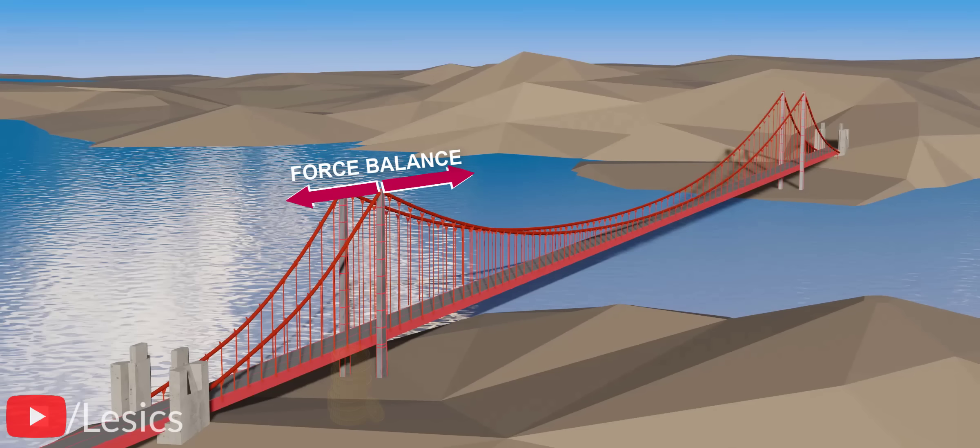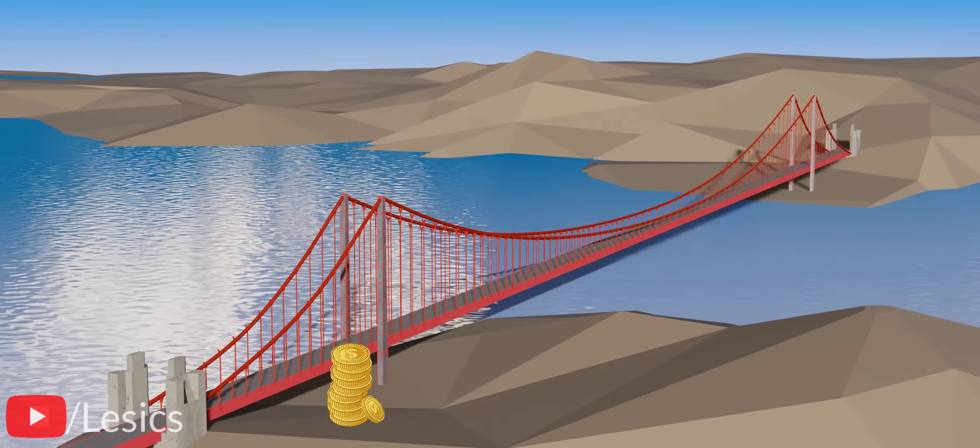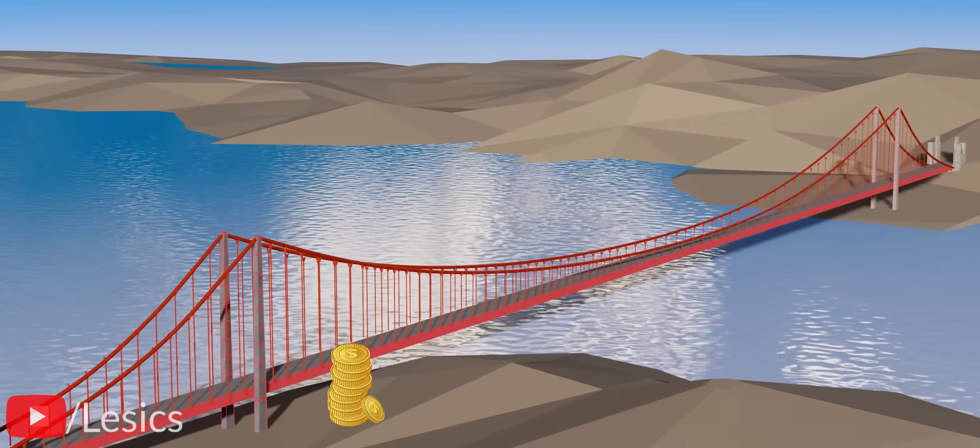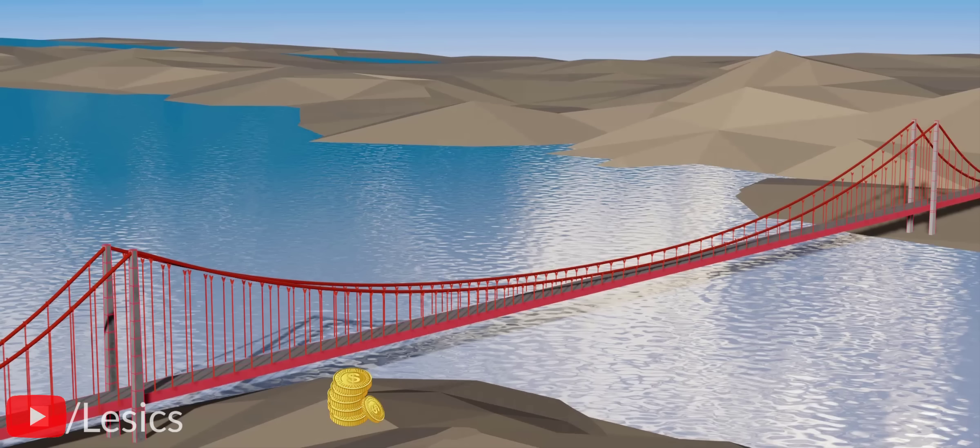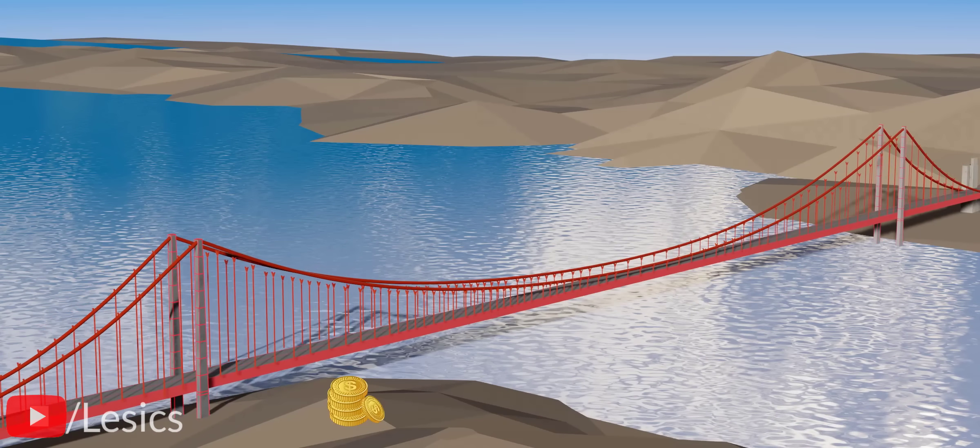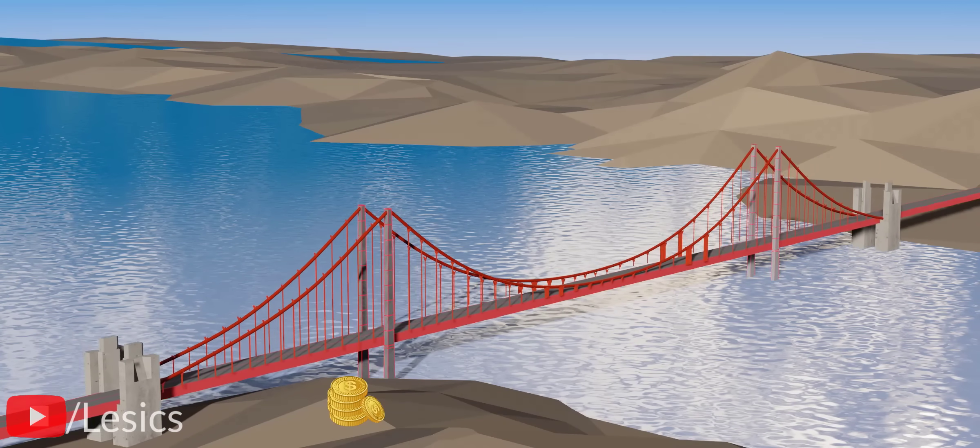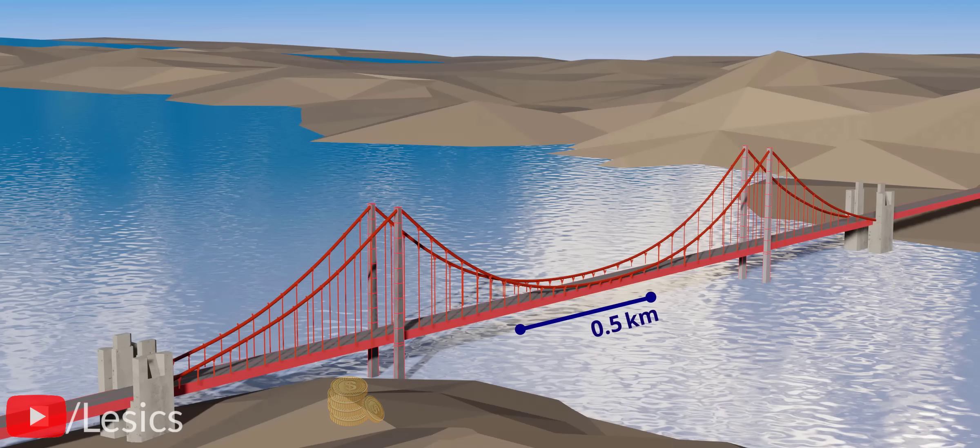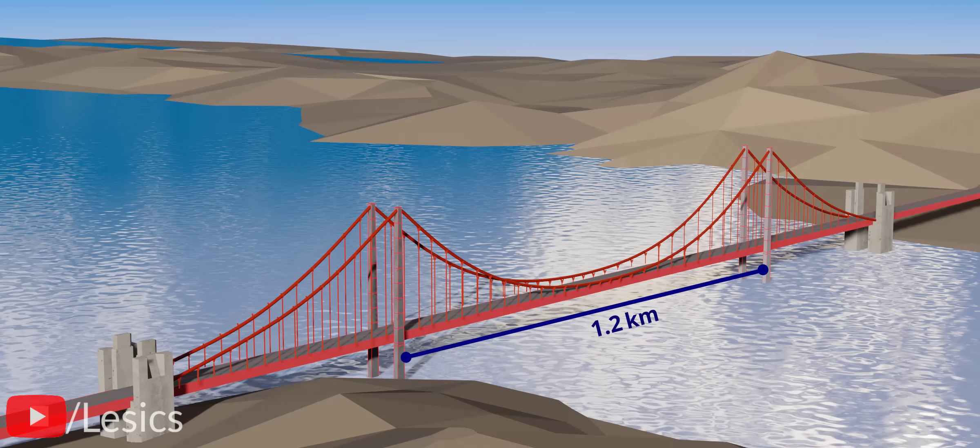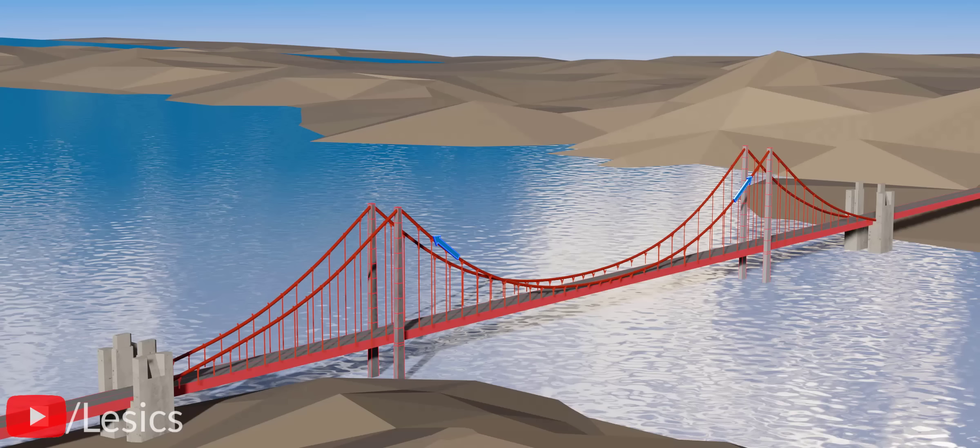However, we can optimize the financial resources needed to construct this bridge with a simple idea. All we need to do is move the towers closer to one another. Now, the length of the unsupported bridge deck is reduced. Due to this, tension in the cable will be reduced.